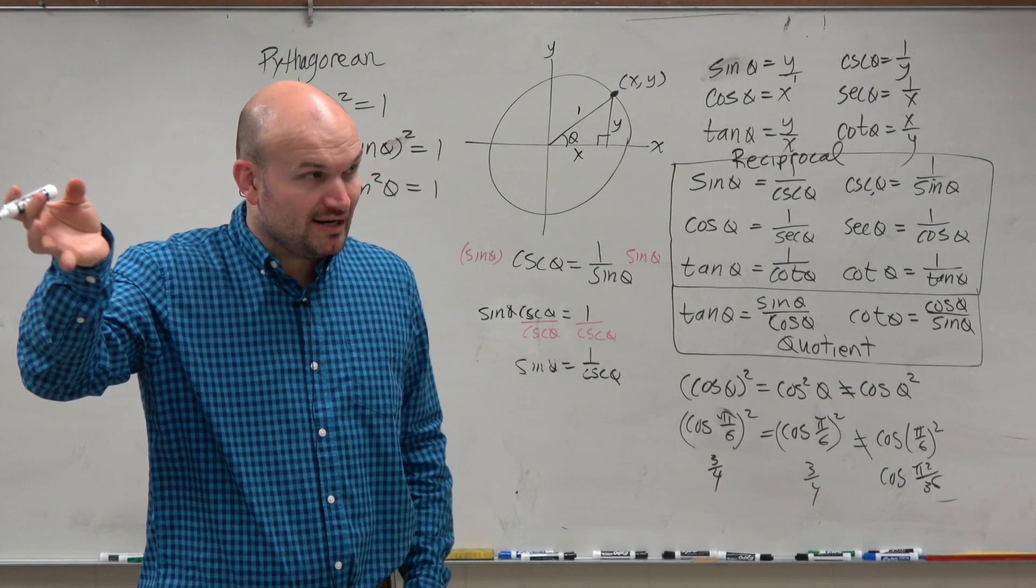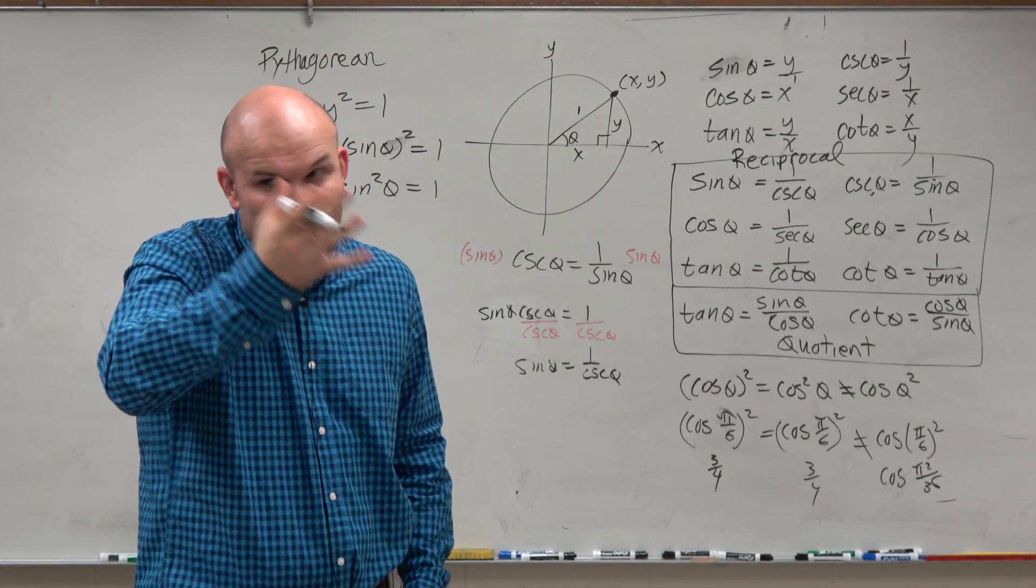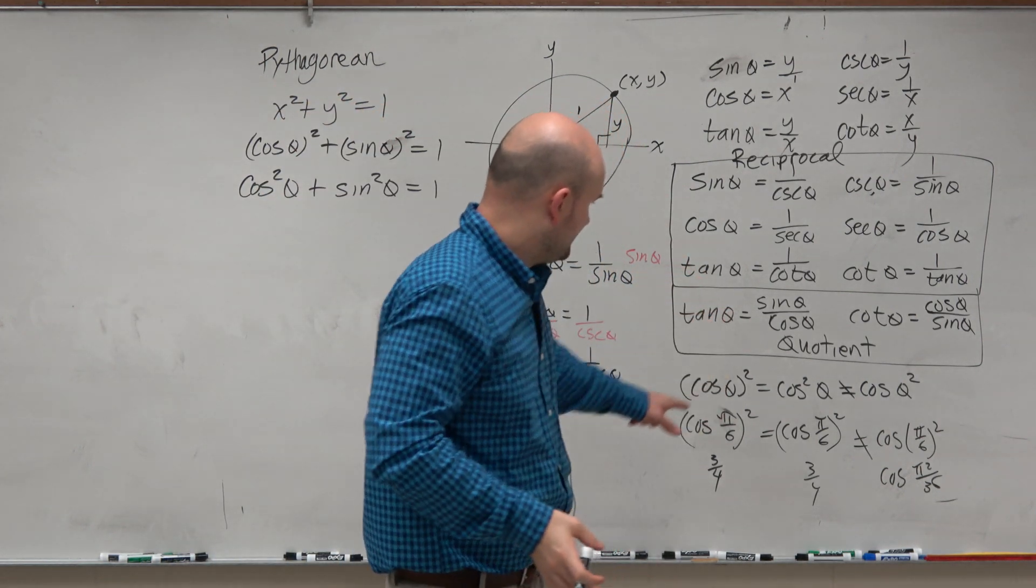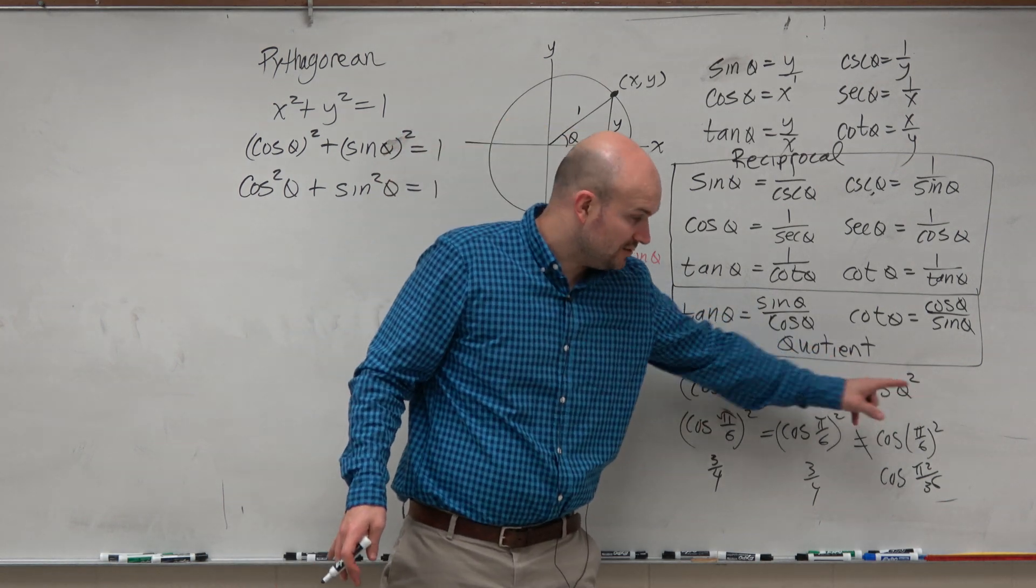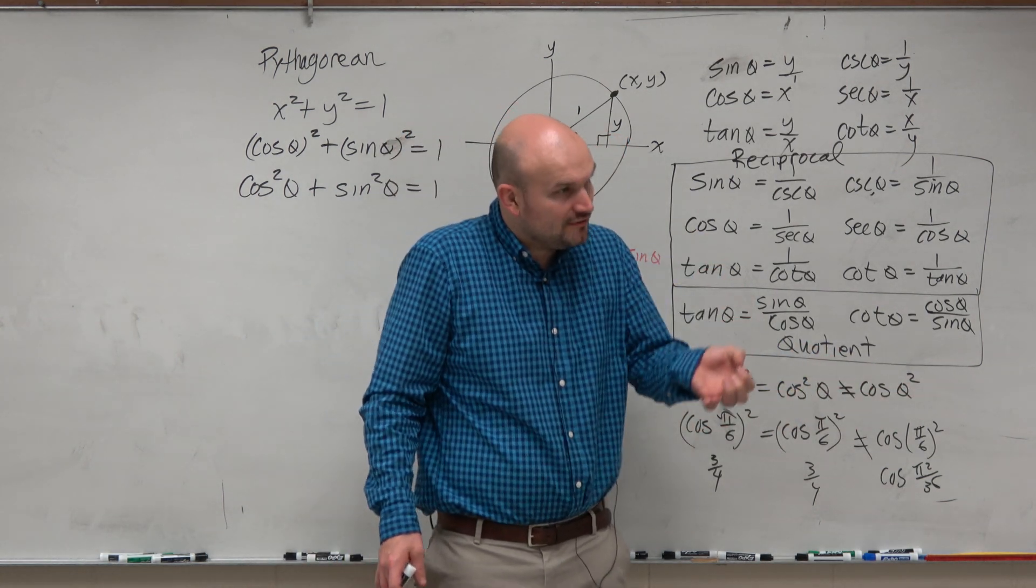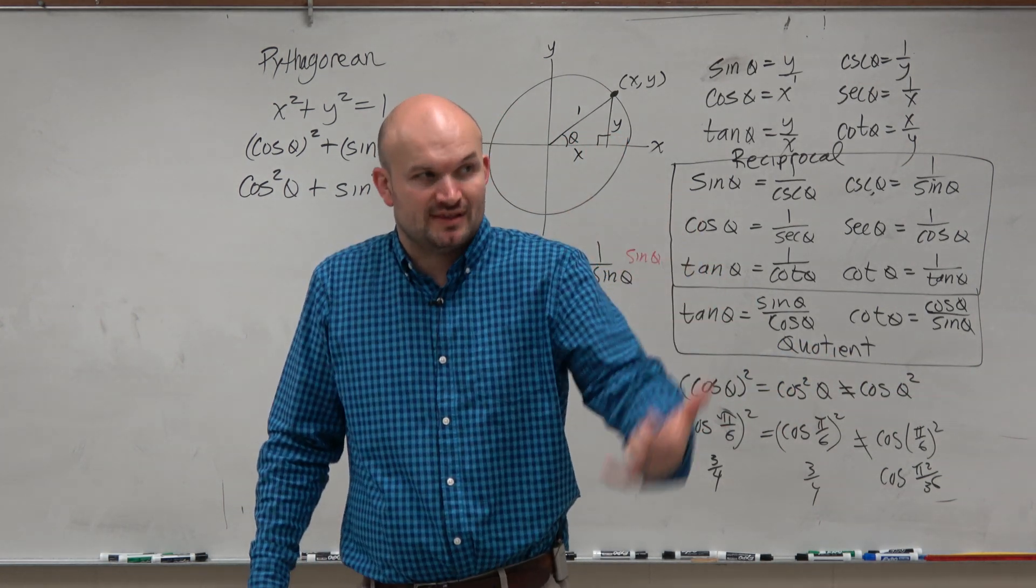When you are squaring at the end, you're squaring the angle. We're not squaring the angle. We're squaring the function, right? Always think about it. The function is being squared, not the angle. So that's cosine of. So it's cosine squared of the angle.